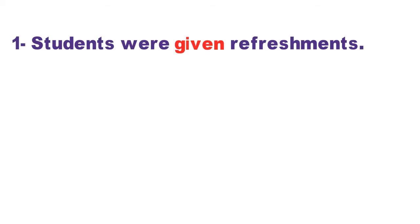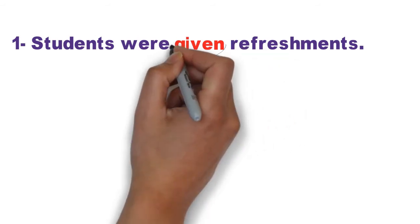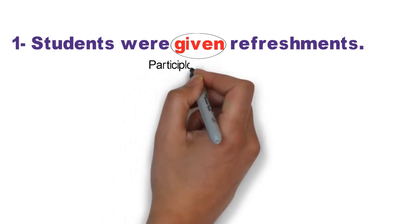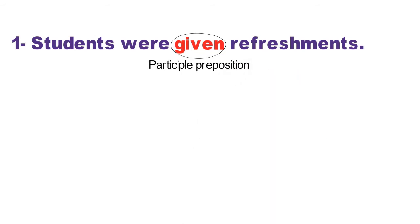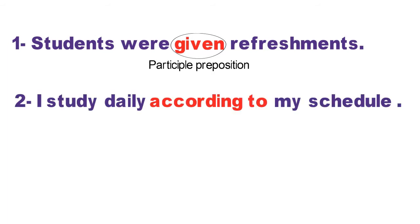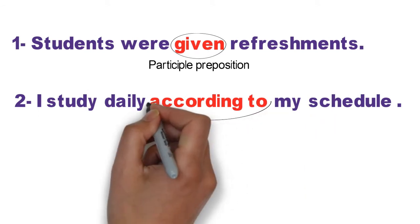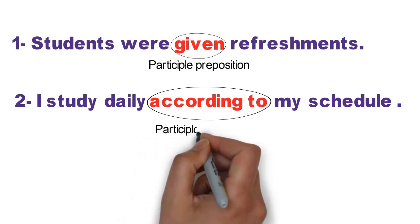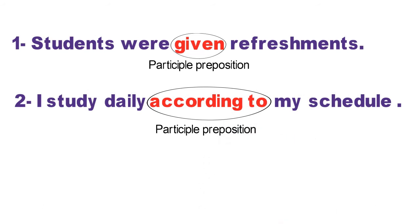Aiye, participle preposition ko bhi kuch sentences mein use karte hain. Pehla sentence: Students were given refreshment. Vidhyarthiyon ko jalpaan diya gaya. Is sentence mein red color word 'given' ka use hua hai. Halanki dikhne mein yeh ek verb hai, lekin yahan par iska use ek connector ki tarah hua hai, isliye ise participle preposition kahenge. Second sentence: I study daily according to my schedule. Mein apne schedule ke anusaar rozana padhai karta hoon. 'According to' yahan par definitely ek verb hai jiske saath 'to' add kar diya gaya hai, aur yahan connector ki tarah use hua hai, isliye ise participle preposition kahenge.